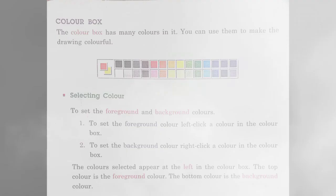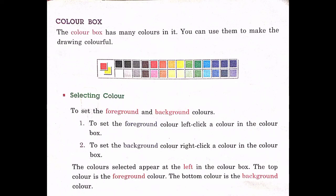Next is the Color Box. The Color Box has many colors in it, and you can use them to make your drawing colorful. To select a color: to set the foreground color, left-click a color in the Color Box. To set the background color, right-click a color in the Color Box. The colors selected appear at the left in the Color Box — the top color is the foreground color and the bottom color is the background color.